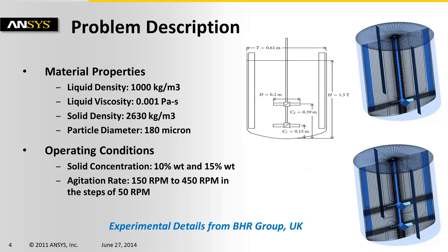Here is the problem description for the present study. There are two different reactors with torospherical tank bottom — one with a single impeller and the other with dual. Impellers are four-blade pitch-blade turbines mounted on a top-mounted shaft. Each reactor was operated at 10% and 15% by weight of solid loading, and agitation rate ranges from 150 to 450 RPM.